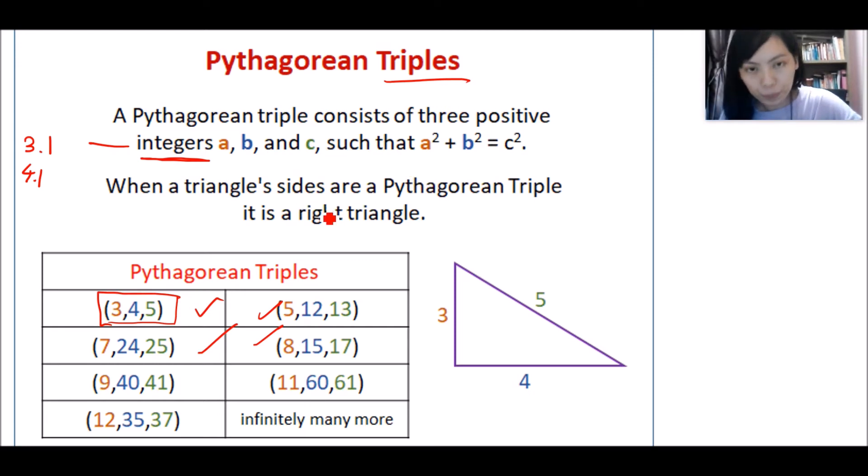So this is the label, the triples. As you can see here, 3 is the shortest side, followed by 4 and 5.